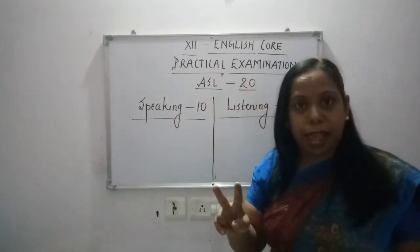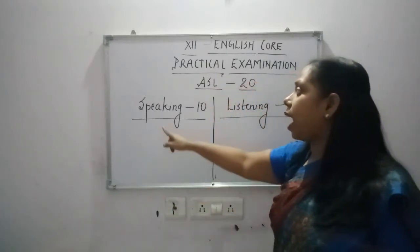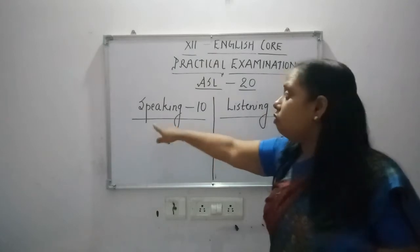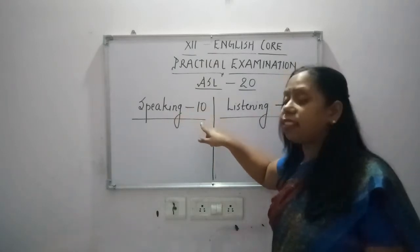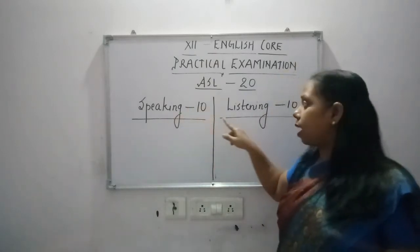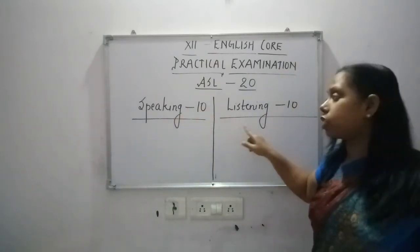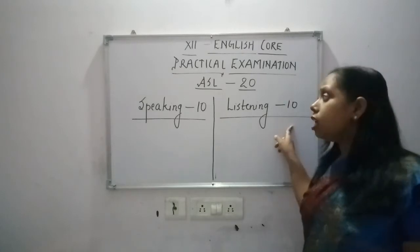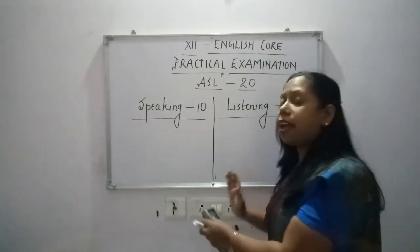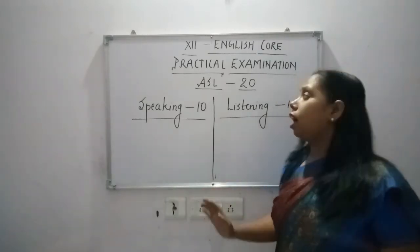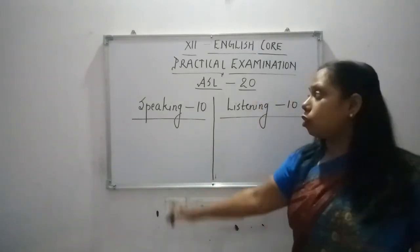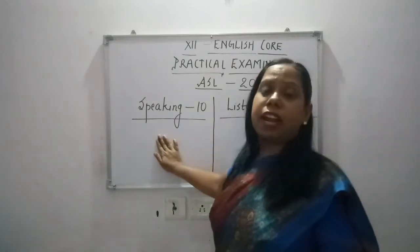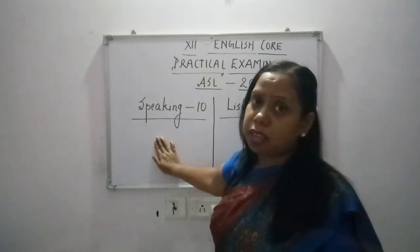There will be two different activities. One activity will be of speaking, which will carry 10 marks, and another activity will be of listening, which will again carry 10 marks. So the combined marking will be of 20 marks.